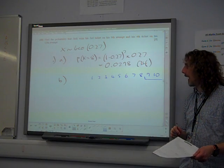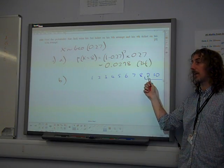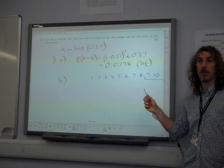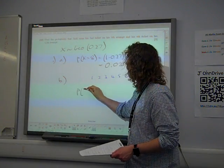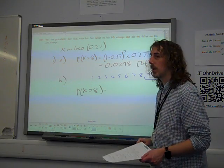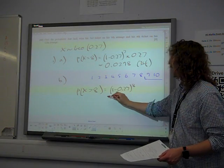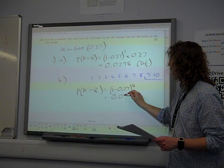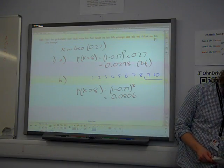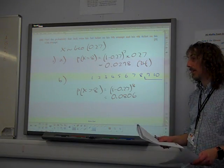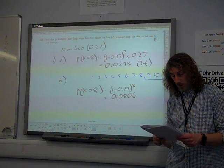What would it mean for him to do it after the eighth attempt? It would mean that he would have eight consecutive failures. That's what needs to happen in order for him to do it sometime after the eighth attempt. So the probability of X being greater than eight, which is what we're asked for, is the probability of eight consecutive failures, which is 0.0806. And again, I know it's really close, but 0.08 is not an acceptable answer.